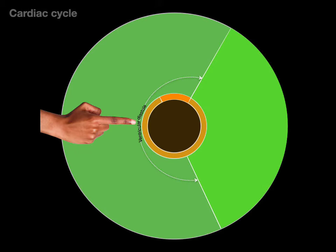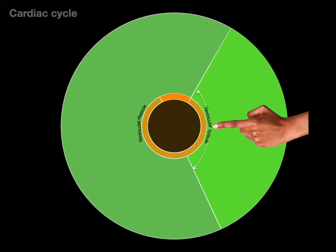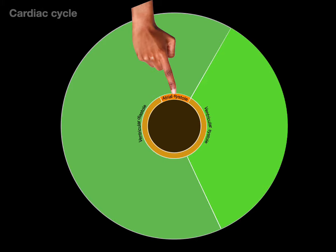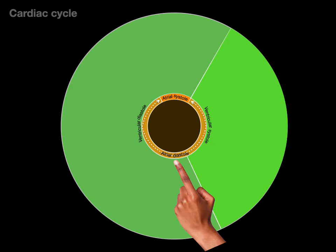The dark portion of the larger green circle represents ventricular diastole, which is twice as long as the lime green portion representing ventricular systole. In the smaller orange circle, part represents atrial systole and the larger part is atrial diastole. So there's the ventricular and atrial contraction-relaxation cycle.